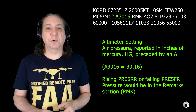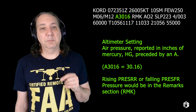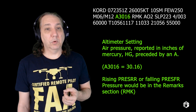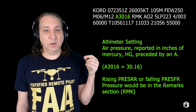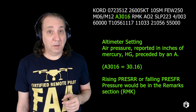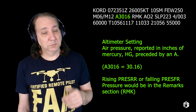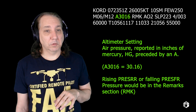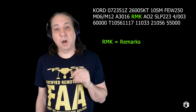Altimeter setting: this is the air pressure reported in inches of mercury (Hg), preceded by an A. So A3016 equals 30.16. If the pressure is rising it's going to say PRESRR, or falling, PRESFR — falling with the F, rising with the R. Pressure will be in the remark section. Zulu time can be there. RMK means remark.